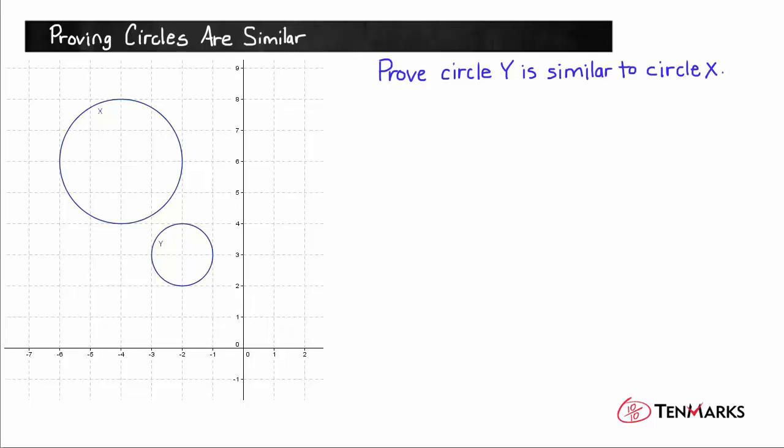We're going to use the fact, again, that two figures are similar if one of the figures can be obtained from the other by a sequence of transformations. It could be reflections, translations, dilations, or rotations. But if one circle ends up looking exactly like the other, then we know that the two are similar.